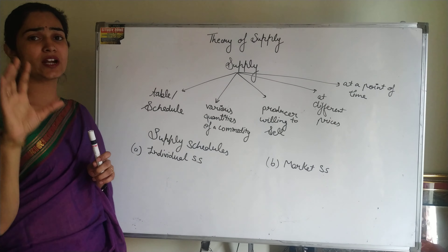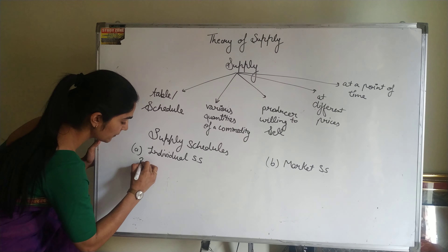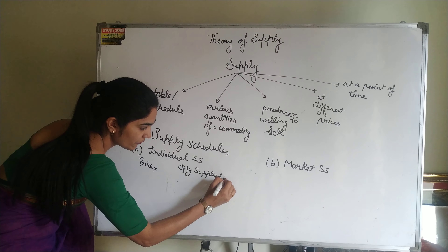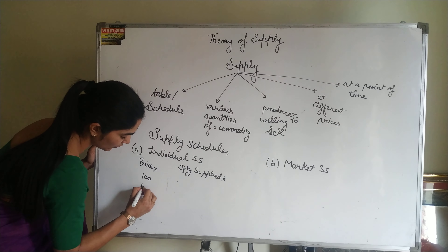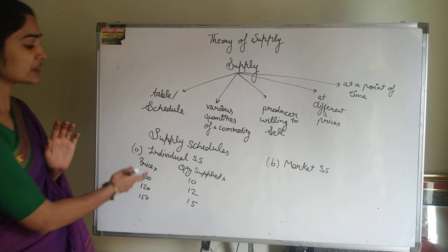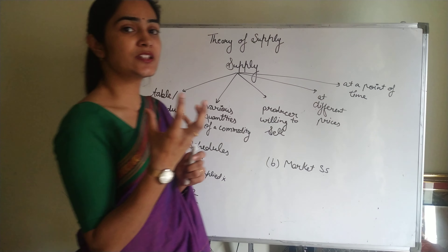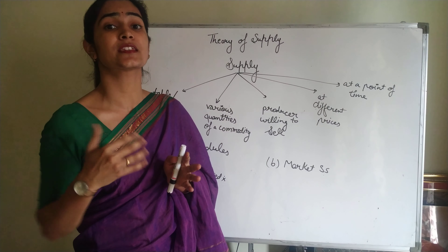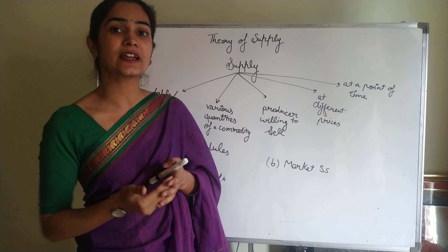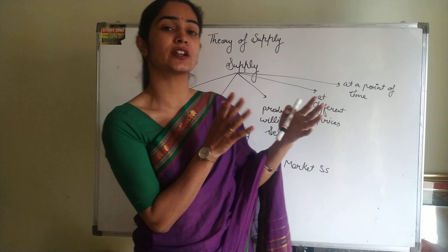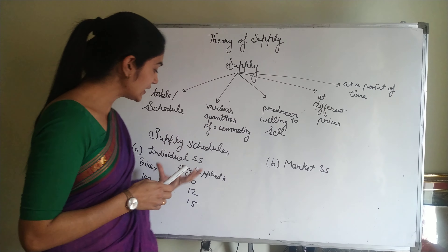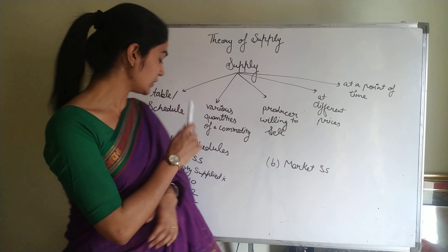For the individual supply schedule, we are talking about a single producer. We will take price and quantity supplied of commodity X. If the price is 100, 120, and 150, the quantity supplied will increase correspondingly — suppose 10, 12, and 15. Here comes the relationship between price and quantity supplied. The very first determinant of supply is price, because what the producer gets for the commodity is its price when he sells it in the market.